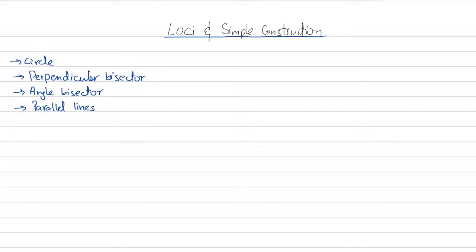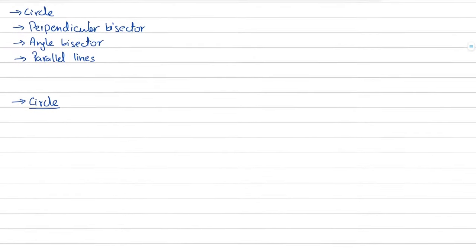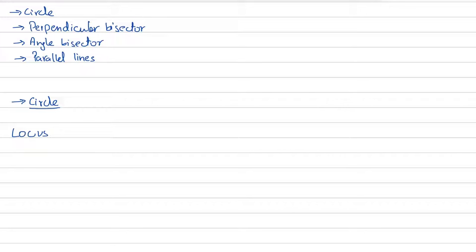The more important question is how do we know what to make? The topic we're doing is loci and simple construction. Loci is simply the plural of the word locus. Locus is a set of points that satisfy a given condition.